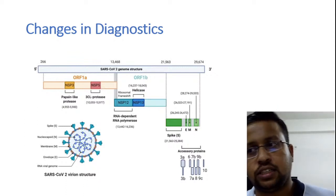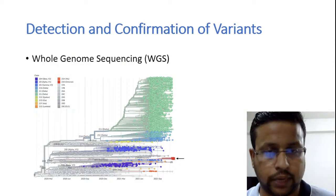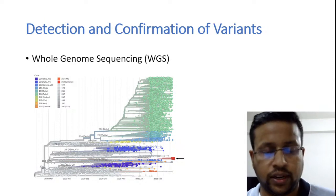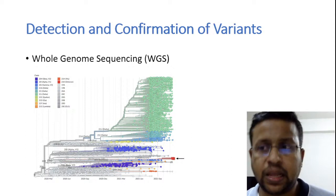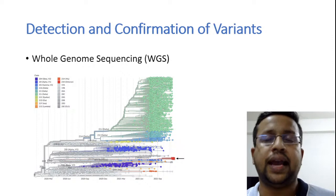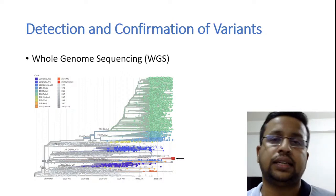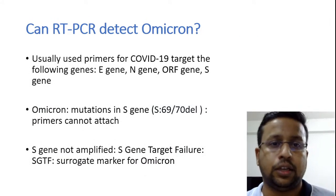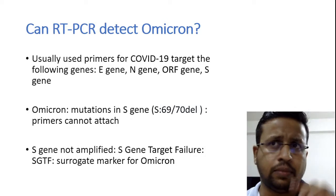Regarding diagnostics — any variant is identified by whole genome sequencing (WGS), which detects any changes in the genetic structure of the virus. However, WGS is done only in research laboratories and is time-consuming and expensive, so we need other tests. RT-PCR uses primers against COVID-19 genes — the commonly used genes include the E gene, N gene, ORF gene, and S gene. Primers attach to these genes and PCR amplifies them to diagnose COVID-19.